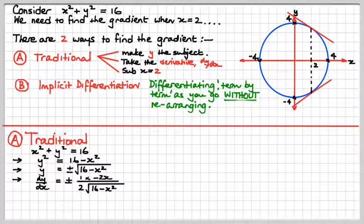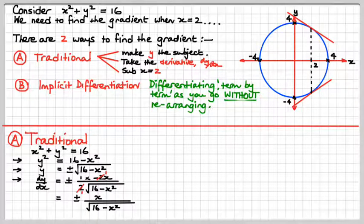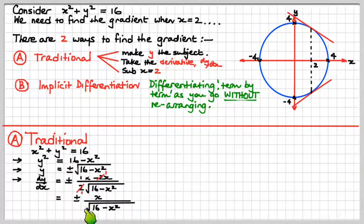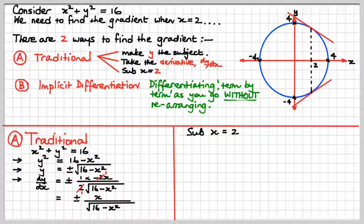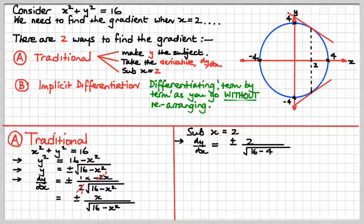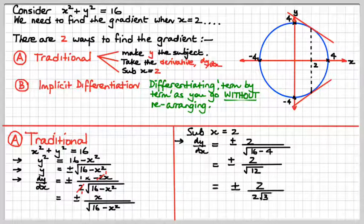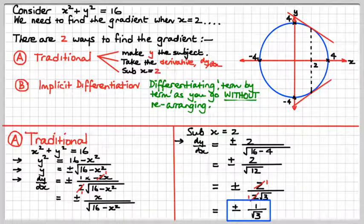These 2s will cancel, and we get dy/dx equals minus x over the square root of 16 minus x squared, plus or minus. Now, substituting x equals 2 gives us 2 over root 12, which is 2 over 2 root 3. Cancel the 2s and you get plus or minus 1 over root 3. You don't have to rationalise the denominator, by the way. That wasn't too much trouble because we were able to make y the subject.